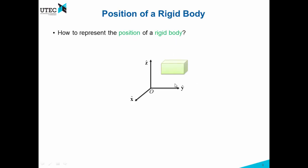How to represent the position of a rigid body? Here we have a rigid body and a reference frame. So what we do is we assign a point, an arbitrary point on the rigid body, and we represent the position of this rigid body through the position of a point that is fixed to the body. In this case, this position vector will be OP.